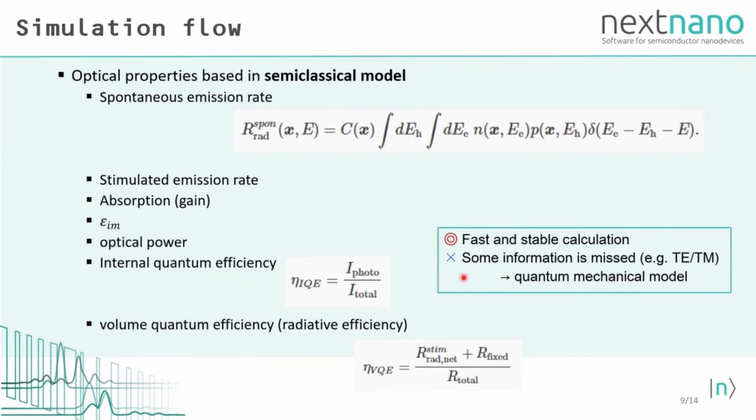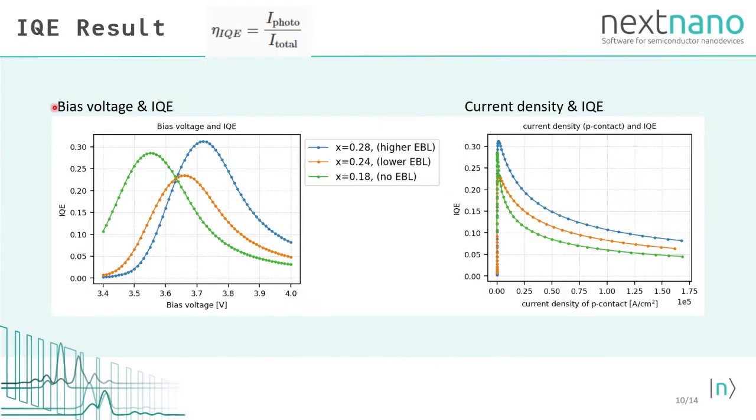Now let's move on to the simulation results for the UV LED structure. Here we have the IQE results of our simulation. The calculations are repeated for each bias voltage in each structure with higher, lower, and no electron blocking layer. The left graph shows the bias voltage and IQE. We can see that the peak of IQE for higher blocking layer is larger than the case without electron blocking layer, whereas it decreases when we introduce the lower blocking layer.